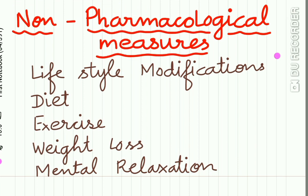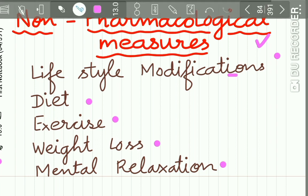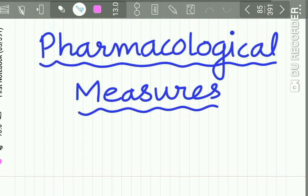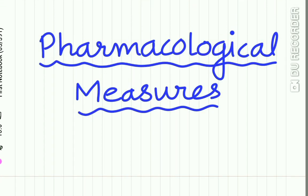Arteriosclerosis may also occur because of hypertension. Retinopathy, aortic aneurysm, renal failure, and glomerulopathy are other complications. While treating hypertension, first you should consider non-pharmacological measures such as lifestyle modifications, which include intake of a proper balanced diet, regular exercise, weight loss, and mental relaxation. After these, you can switch to pharmacological measures.